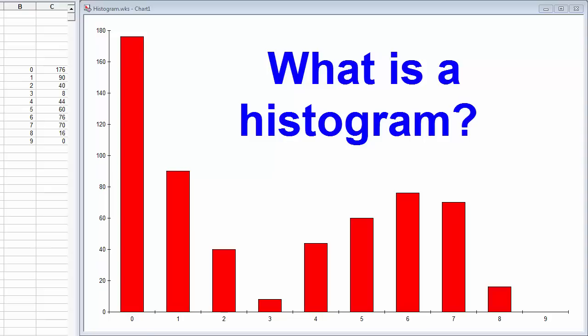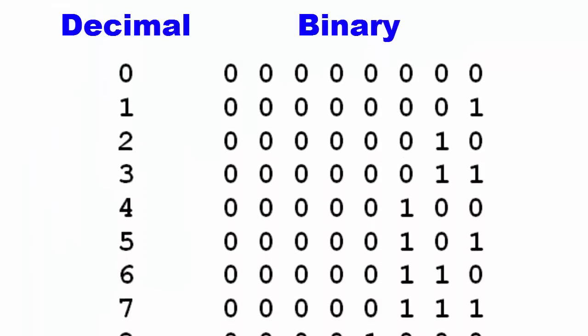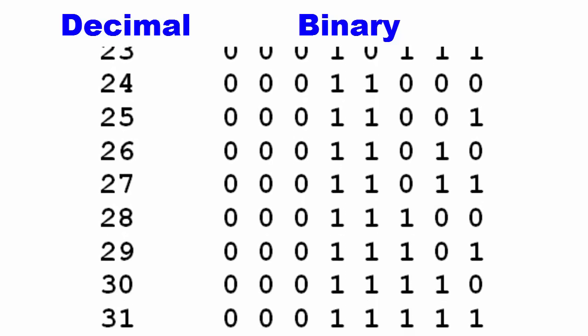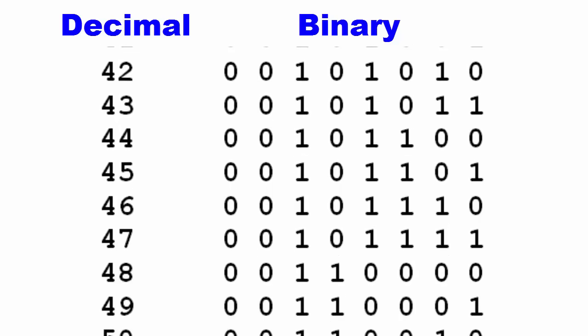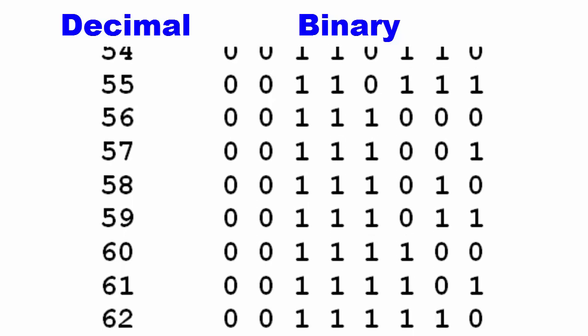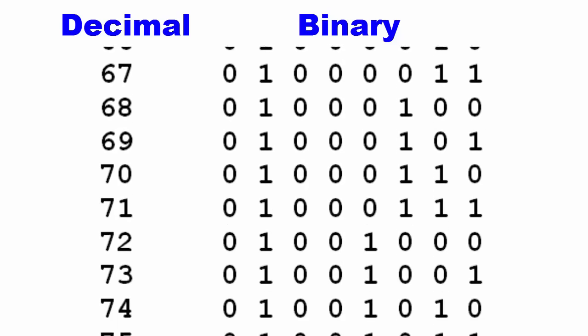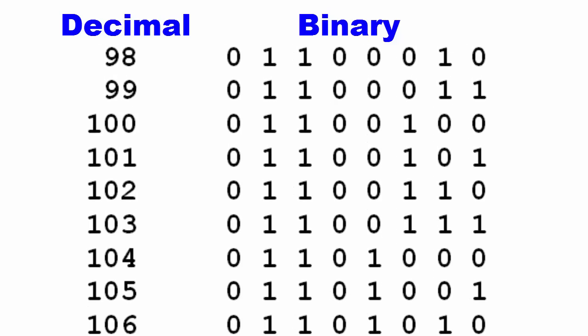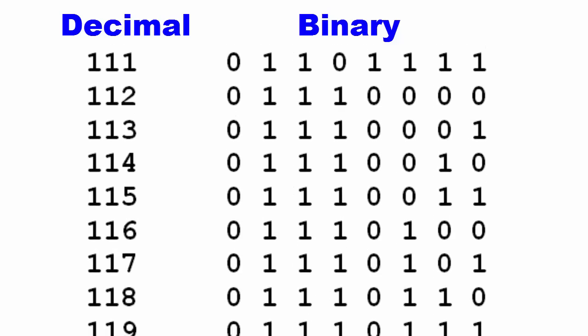A histogram tells us something about the brightness of the pixels in our image. For planetary imaging, we typically use 8-bit numbers to represent the brightness of a pixel. In binary, the number is made up of 1s and 0s. The smallest value is 0, which is pure black. The numbers go up one by one until we have all 1s, the highest value, which is pure white. The highest value that can be represented with 8 bits is 255.